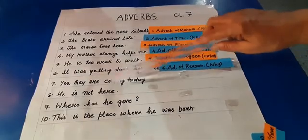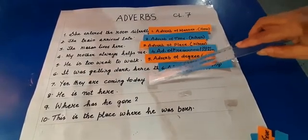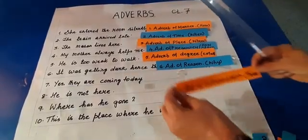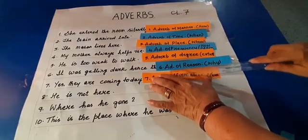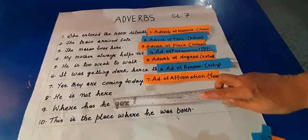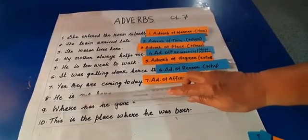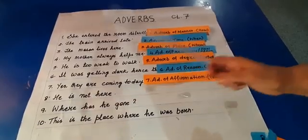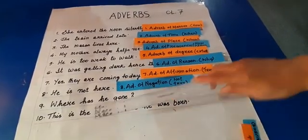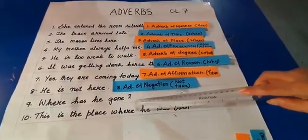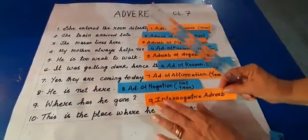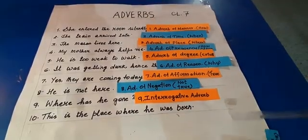Yes, they are coming today — this is affirmation because it is a truth. They are definitely coming. Therefore, here we will get the adverb of affirmation. Saying 'he is not here' tells me negative — 'not' is a negative word. Therefore, 'not' is the adverb of negation. Where has he gone? Here we are asking a question. Therefore, 'where' is the interrogative adverb.